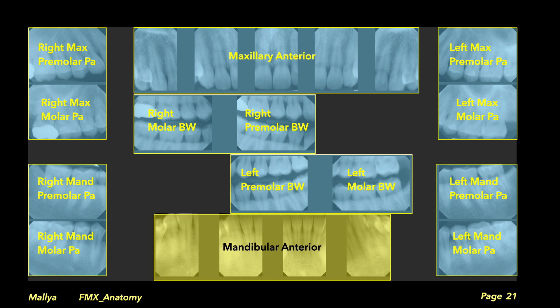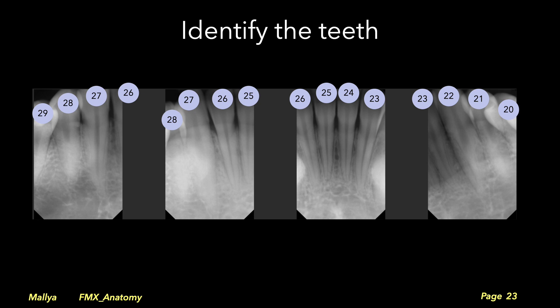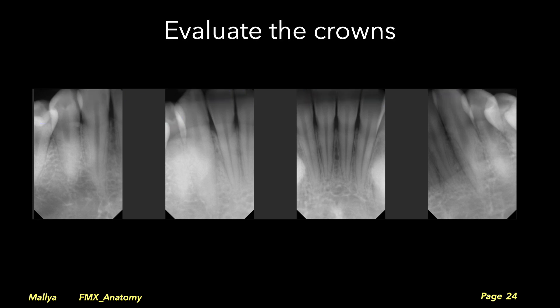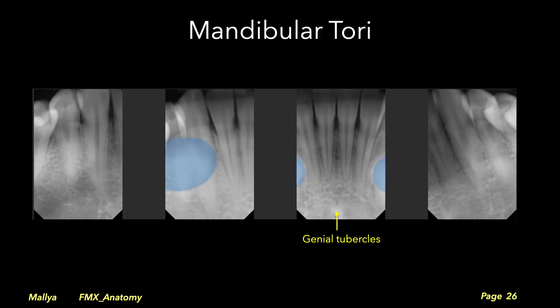We next move on to the mandibular anterior region. These radiographs should show the incisors and canines. Start by systematically identifying the teeth and evaluating the crowns for morphology and caries. Note that in these radiographs the incisal edges of the teeth are not demonstrated; ideally, the radiograph should demonstrate the entire tooth length from the incisal edge to the root apex. Trace the periodontal ligament space and laminar dura around every root. Note that in our patient, there are diffuse radiopacities over the canine and premolar regions bilaterally, representing areas of mandibular tori. This is an anatomic variation, which can be confirmed with a quick clinical examination.